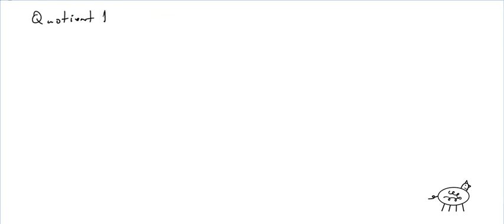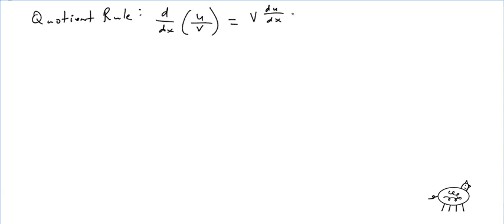So let's do the quotient rule. Here it is in math format: d/dx of u/v equals v·(du/dx) minus u·(dv/dx), all over v squared.